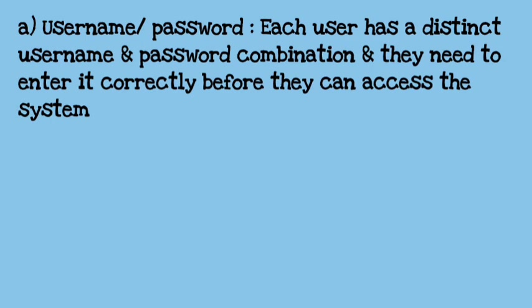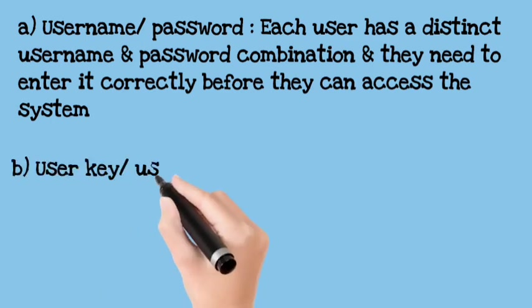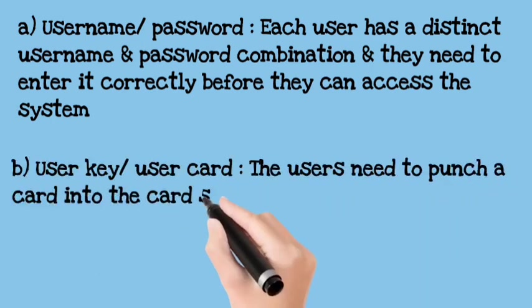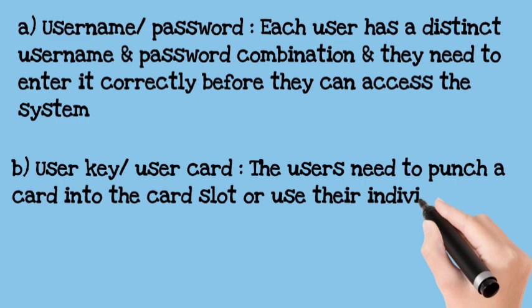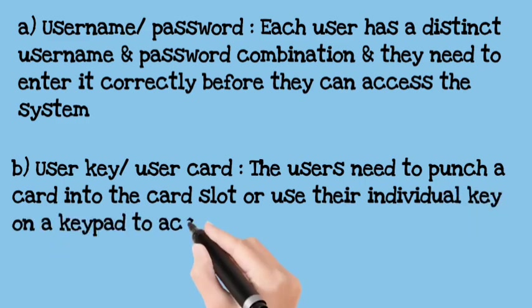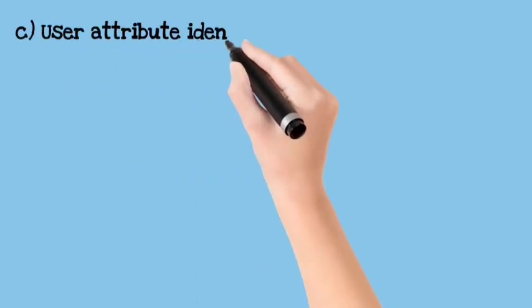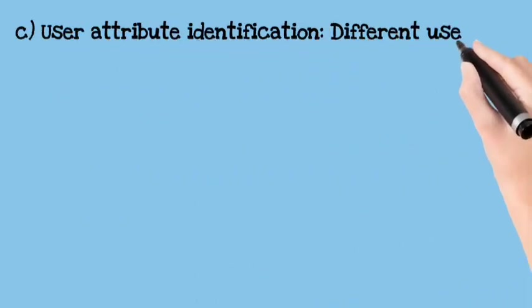If the credentials are correct then the system is accessed and the system will know it is the authorized person. If it is incorrect, the system will know it is an unauthorized user. Second, we have a user card. What is the user card? It is a card which is put in a slot and it has an individual key which helps the system to access via the keypad.